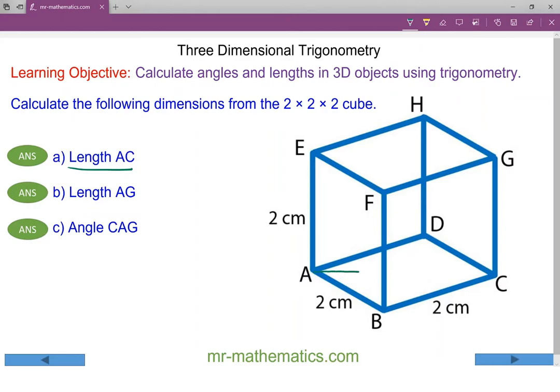To do this we're going to visualize AC as a right angle triangle where the right angle is at B because the face is a rectangle. So we have our right angle triangle where AC is the hypotenuse, B is the right angle, and AB is two centimeters and BC is also two.